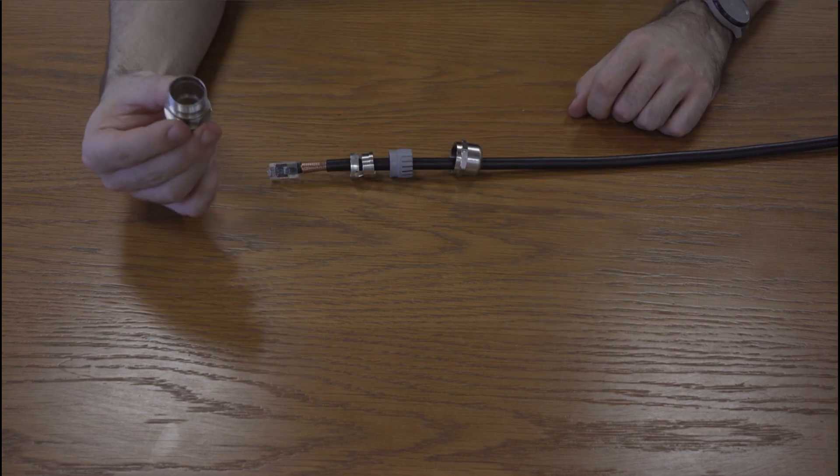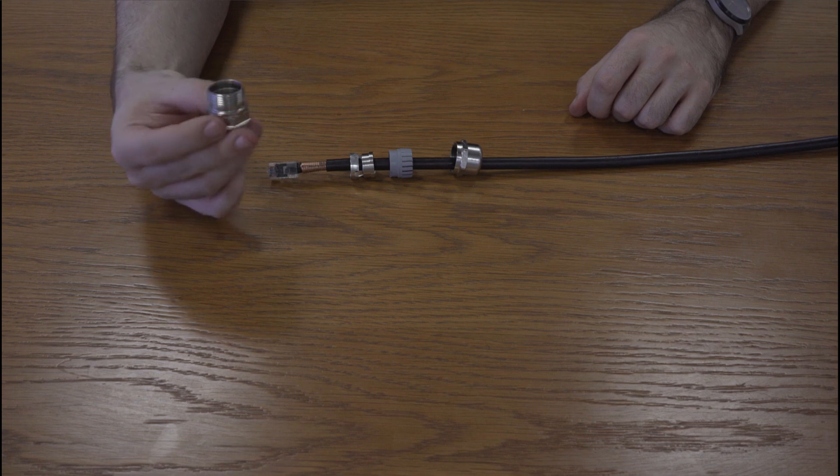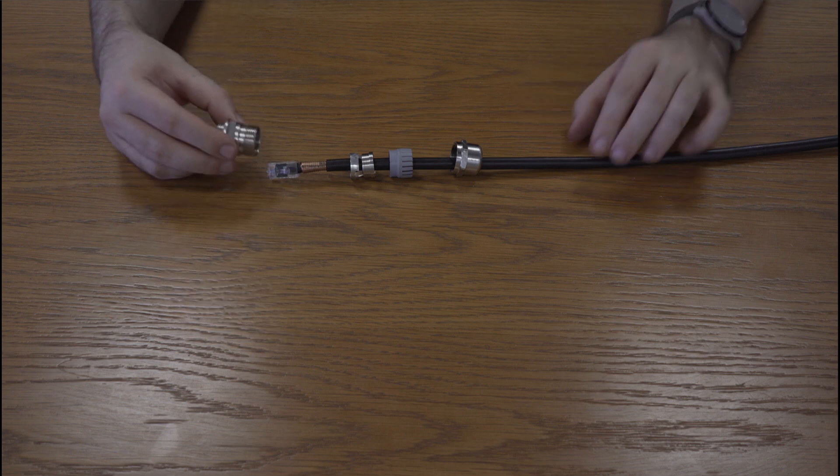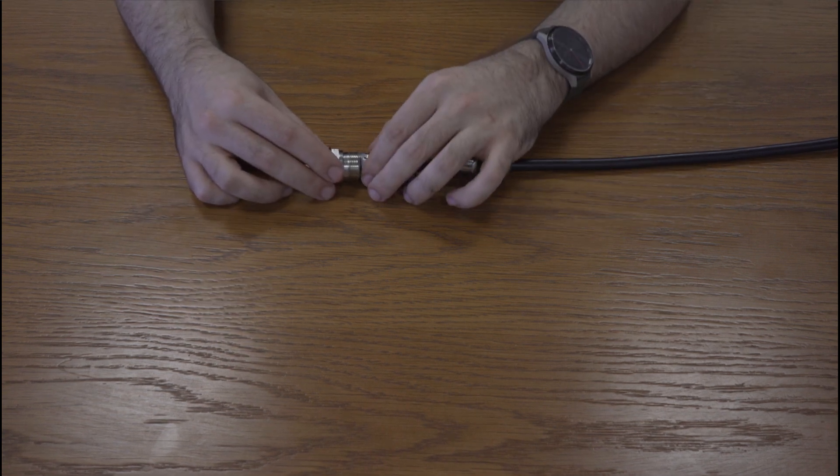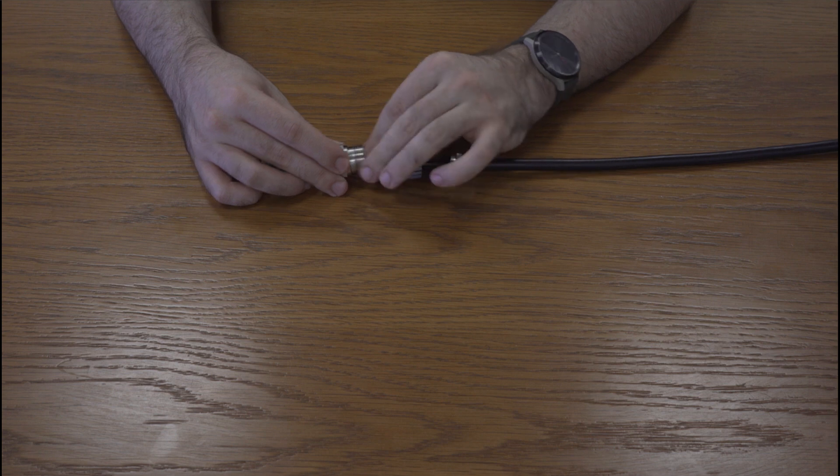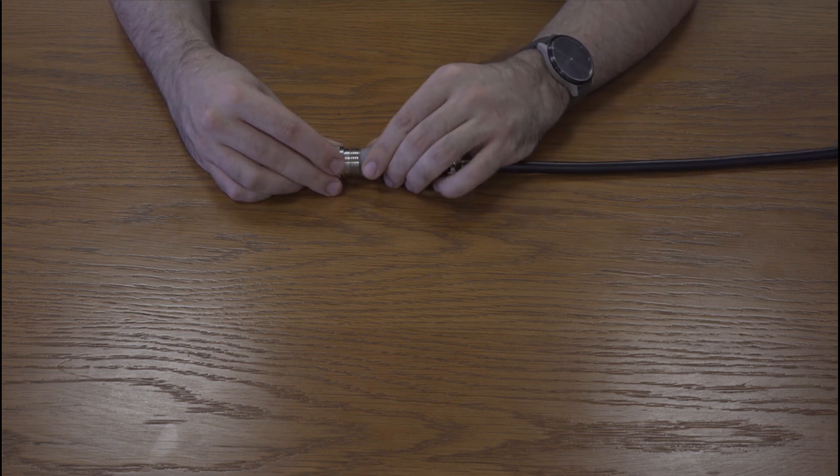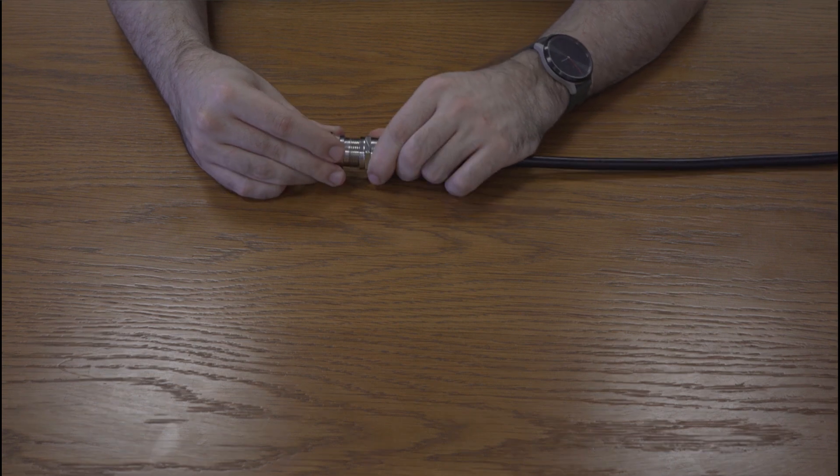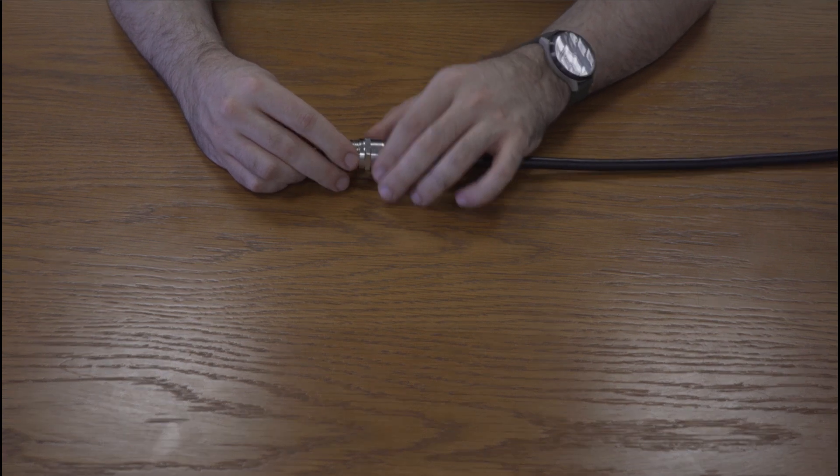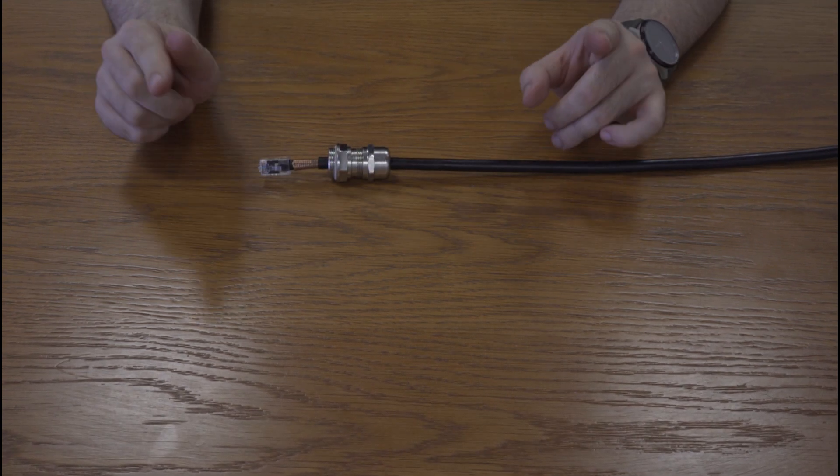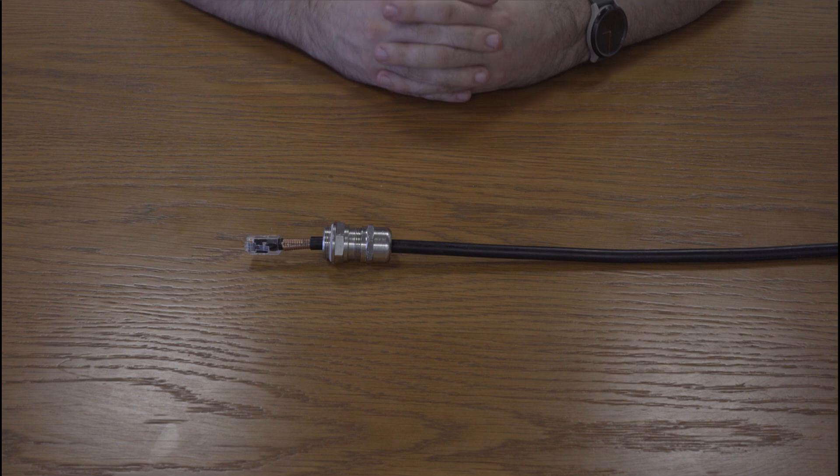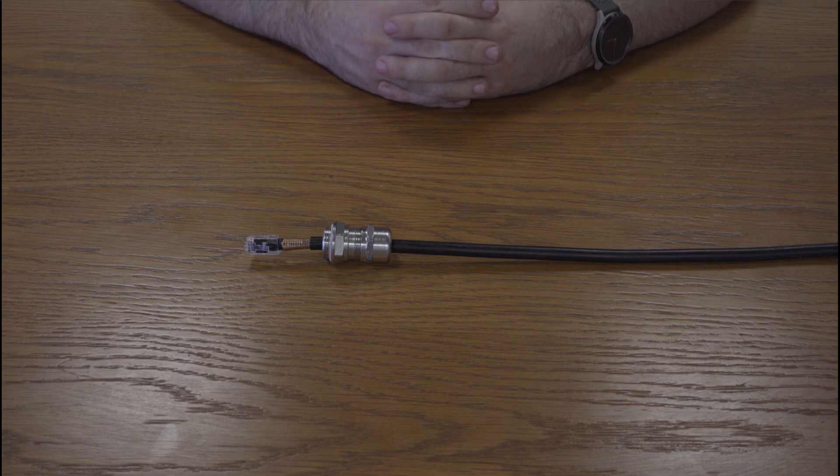And then finally put the base of the gland on the drop cable, longer thread first, like so. Then you insert the metal pieces into the base of the gland, then the plastic insert, and finally the cap on top. Twist it a couple times loosely in order to hold all of the pieces together, but do not tighten at this point. Once you have attached the EMC gland to the drop cable, it should look something like this.